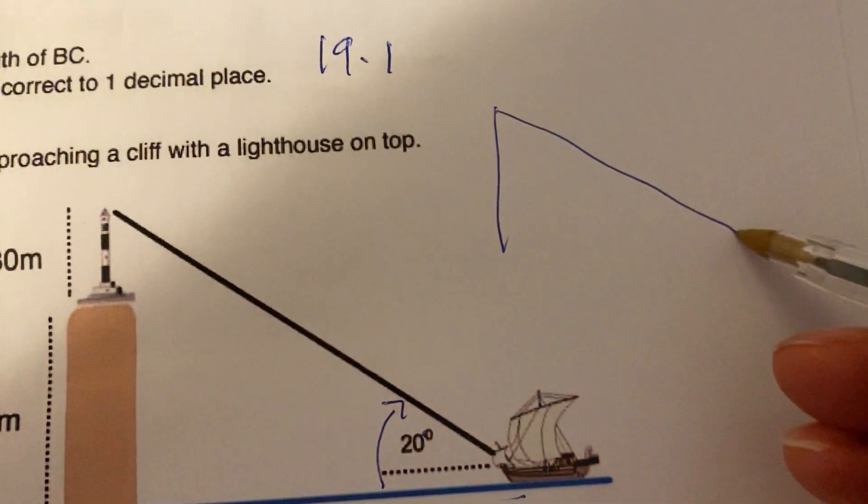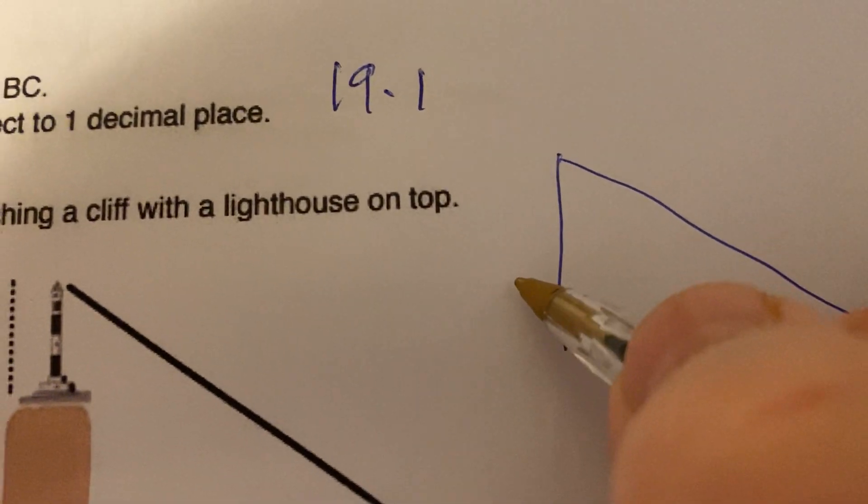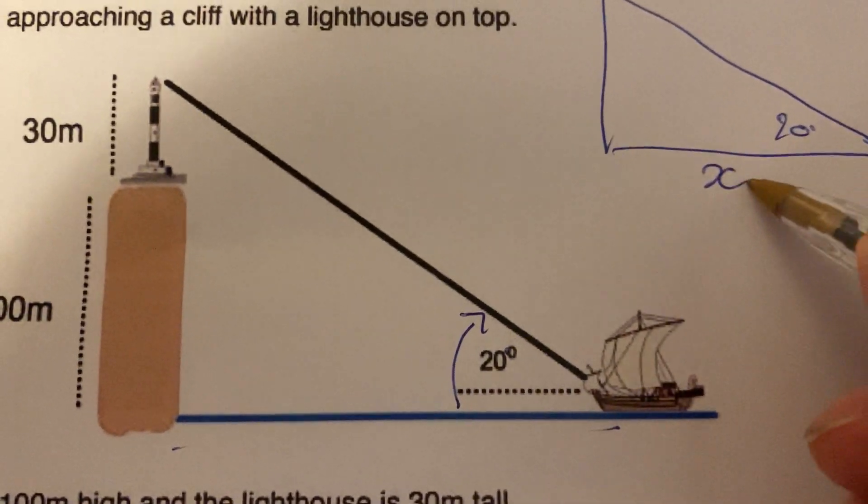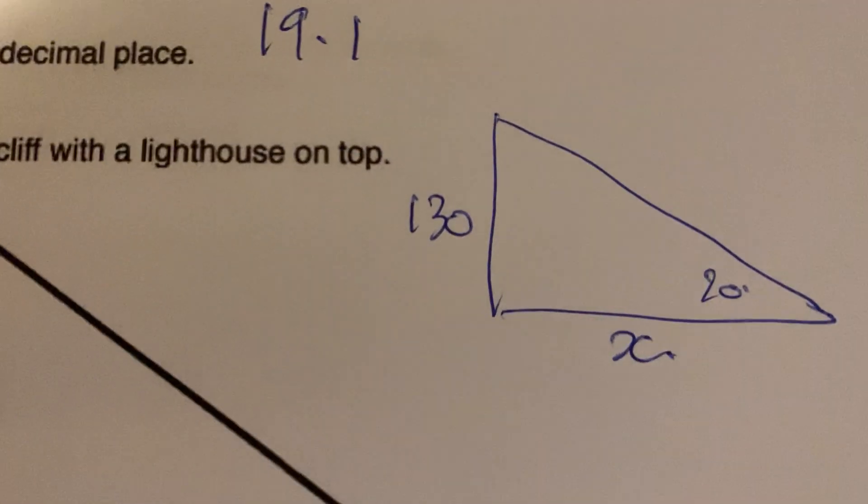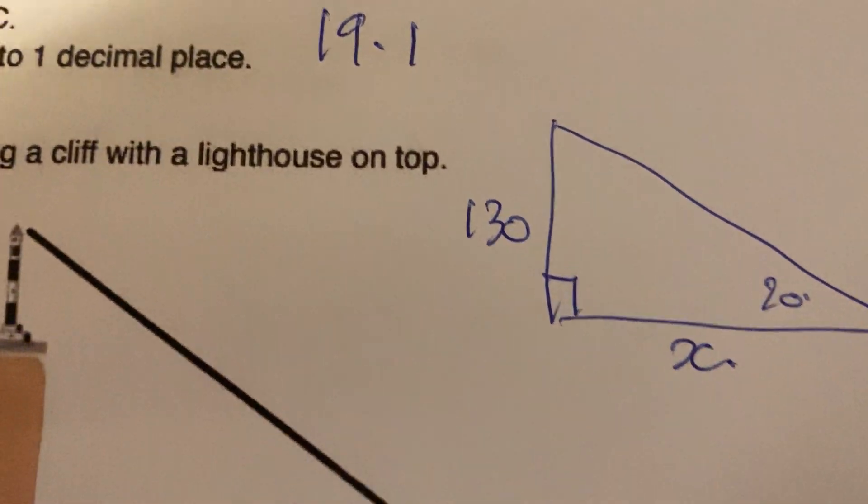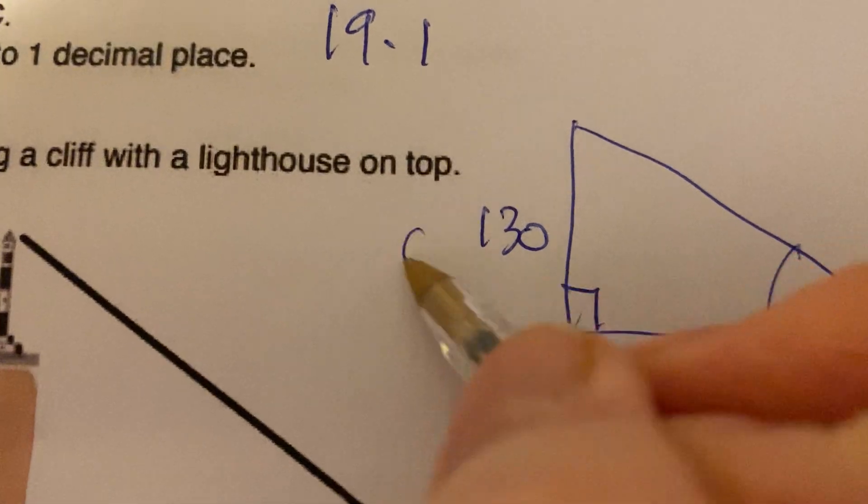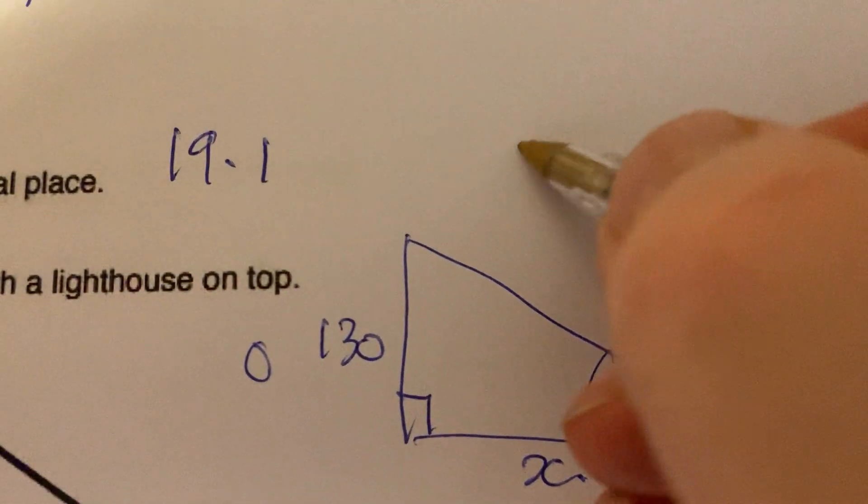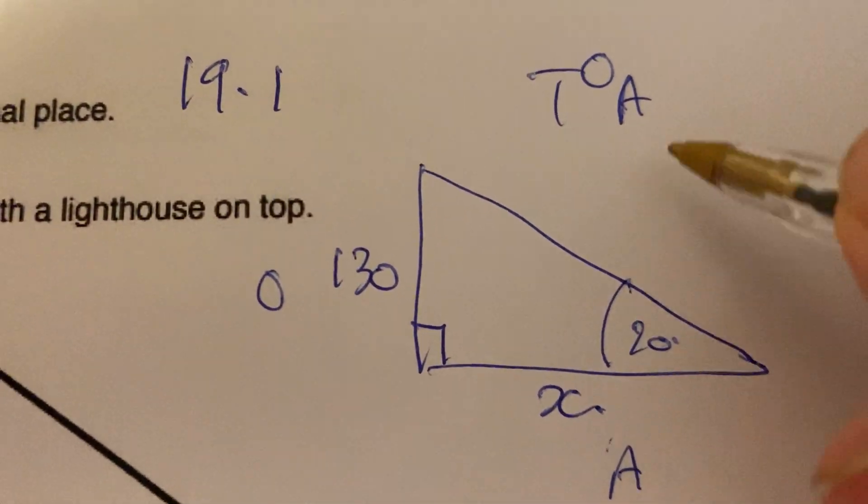This is my triangle. That's 20 degrees. It says calculate the distance, so I want this measurement here. I know that the total height is 130 meters. That's my right angle. I've got my angle, this is next to it so that's adjacent, this is opposite. Which basically means I've got TOA.